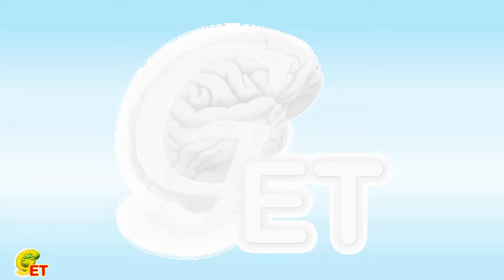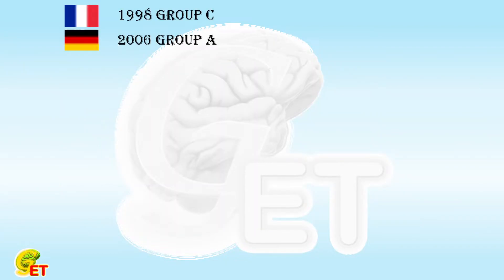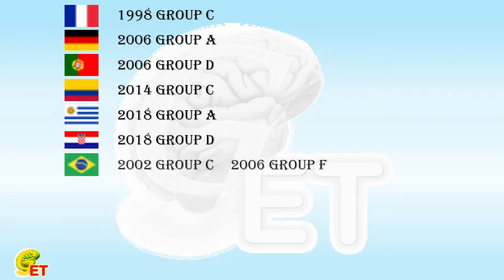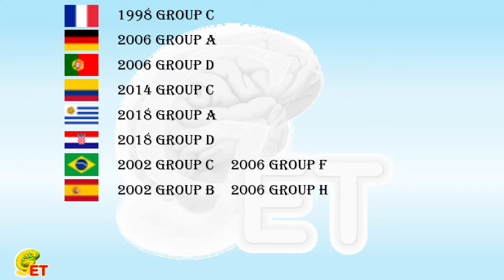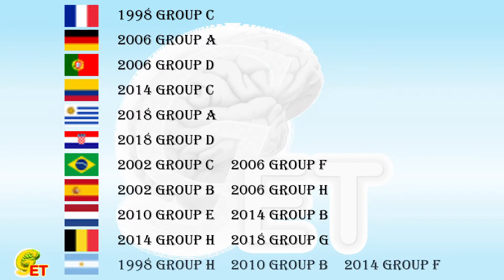First, let's give the answer to the question we left yesterday. In the FIFA World Cup from 1994 to 2018, which team won all the group stage games the most times? The teams who won all group stage games include France, Germany, Portugal, Colombia, Uruguay, and Croatia — each once; Brazil, Spain, Netherlands, and Belgium — each twice; and Argentina — three times. So the answer is Argentina.